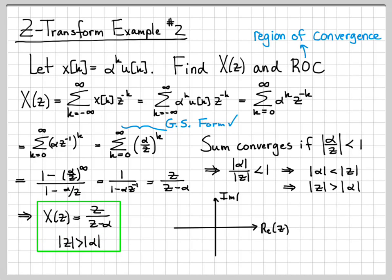I can actually plot that region of convergence in the complex plane or the Z plane, however you want to say it. Let's say that alpha for now is just a real valued quantity, so it's on the real axis.